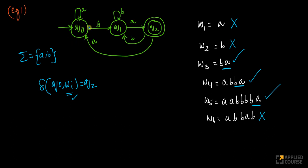If I start here and keep getting a's, I stay in the same state. When I get my first b, I go to q1. From q1, if I get one more a, I reach the final state. If I get another b or another a after reaching q2, I move back to other states like q0 and q1.